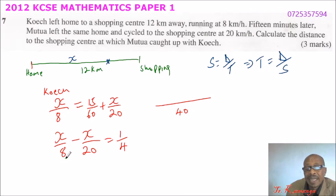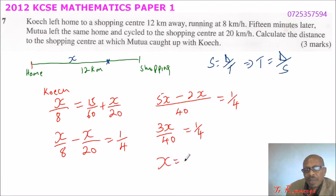40 divided by 8 is 5. 5 multiplied by X, you get 5X. Minus, 40 divided by 20 is 2. 2 multiplied by X is 2X equals to 1 over 4. So, this is 3X over 40 equals to 1 over 4. So, to get X on one side, you say it is 1, you multiply it by 40 and you divide it by 3.